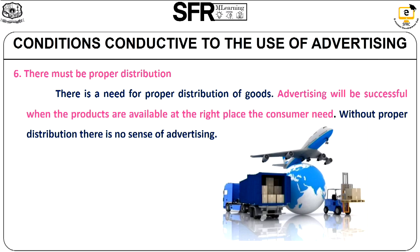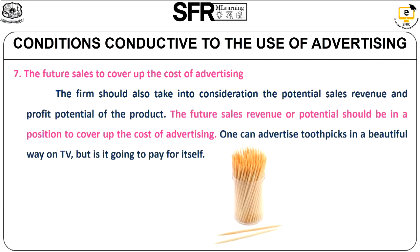The sixth condition is there must be proper distribution. The manufacturer should not only concentrate on advertising the product but must also concentrate on distribution techniques. Without proper distribution, there is no sense in advertising. The product should be available to the consumer at the right time and at the right place.